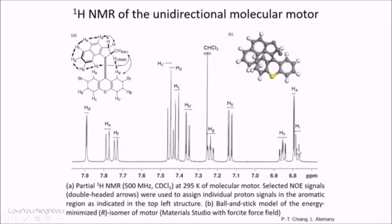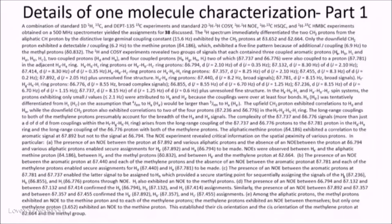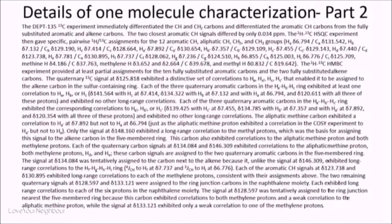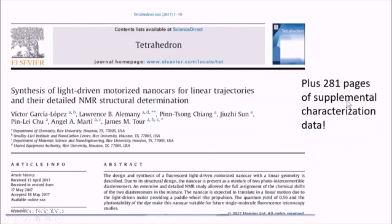Then you have to characterize it. We use a tool called nuclear magnetic resonance and we characterize it. Looking at just one molecule, we break down these structures and characterize it. How do we describe to the world that we know what we're doing? We write it up — and that's only part one, there's a part two. You have to do this to convince your colleagues that you got what you say you got. For this paper on the nanocars, it had 281 supplemental pages just talking about how we characterized it to prove that we got what we got.